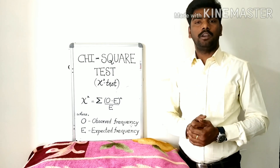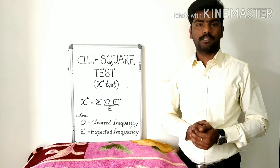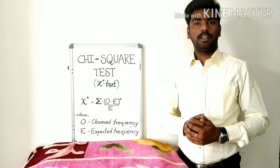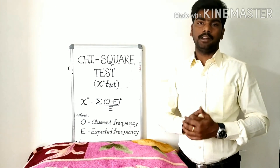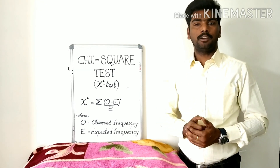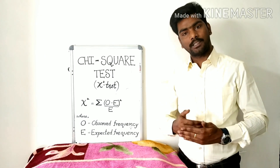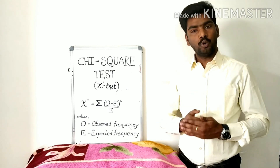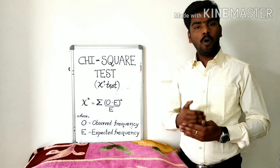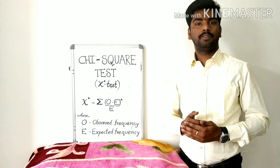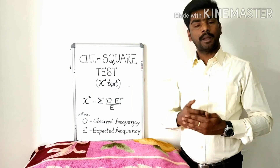The quantity chi-square describes the discrepancy between the observed and the expected frequencies. If chi-square is 0, then the observed and the expected frequencies completely coincide. The greater the value of chi-square, the greater the discrepancy. The formula is: summation of (O minus E) squared divided by E, where O is the observed frequency and E is the expected frequency.